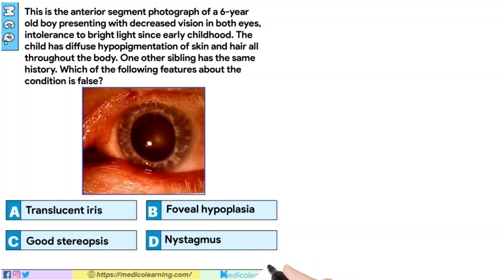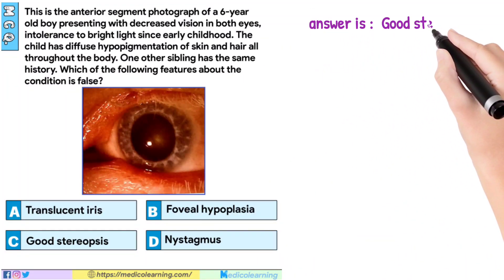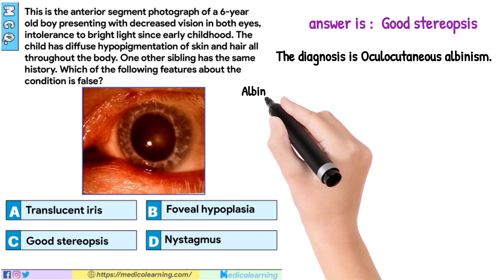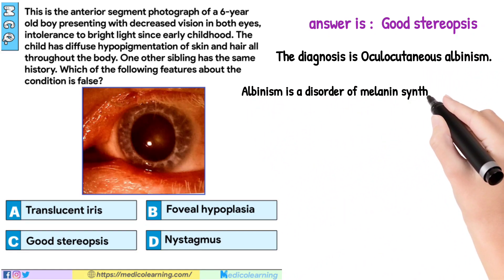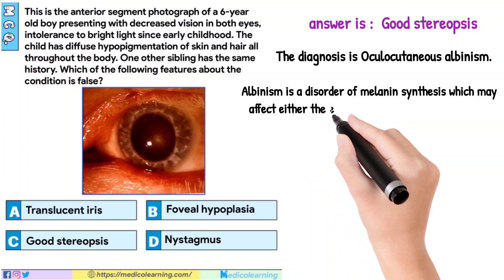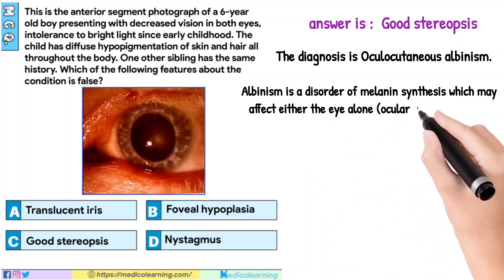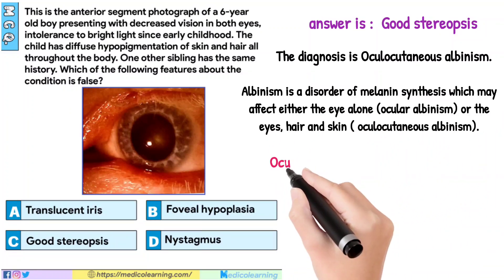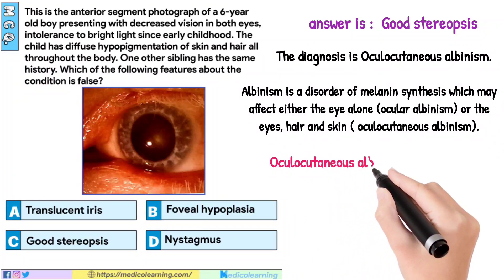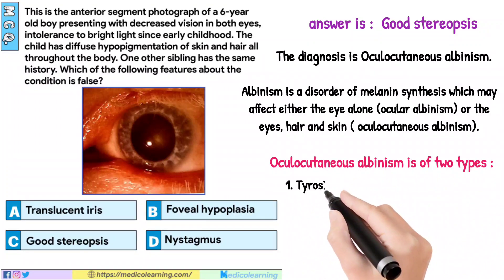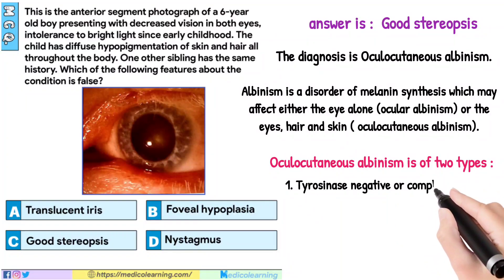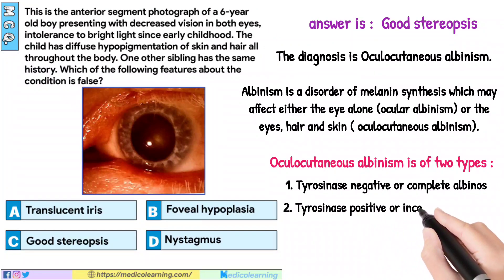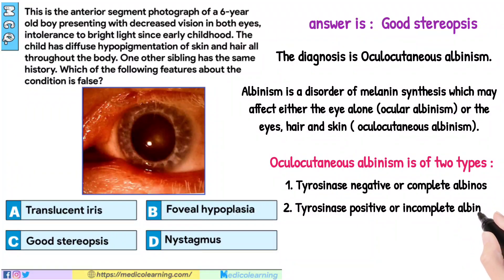In this question, the answer is Good Stereopsis. The diagnosis is Oculocutaneous albinism. Albinism is a disorder of melanin synthesis which may affect either the eye alone (ocular albinism) or the eyes, hair and skin (oculocutaneous albinism). Oculocutaneous albinism is of two types: 1. Tyrosinase negative or complete albinos; 2. Tyrosinase positive or incomplete albinos.